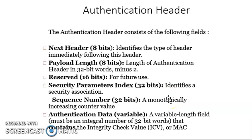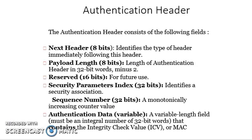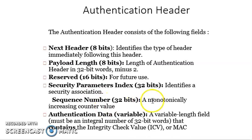The next header field identifies the type of header immediately following this header — it is an 8-bit field. The payload length is an 8-bit field containing the length of the authentication header in 32-bit words minus 2. The reserved field is 16 bits for future use. The security parameter index identifies the various types of security associations. The sequence number is a monotonically increasing 32-bit counter value. The authentication data is a variable-length field containing the integrity check value, which is a multiple of 32 bits.